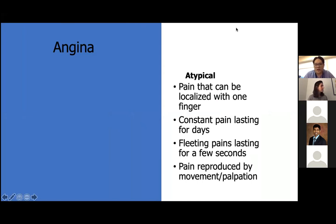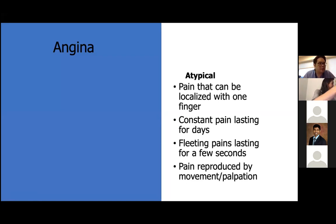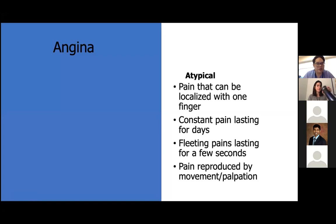Cardiac chest pain from obstructive CAD generally lasts several minutes and can radiate to the arm, jaw, or back. It's not associated with respiration or position and can be associated with diaphoresis or nausea. Atypical chest pain may be localizable with a single finger, reproducible with palpation, or occurs with movement — making it less likely to be obstructive CAD. Chest pain lasting days without troponin elevation or EKG changes is also unlikely to be CAD-related.